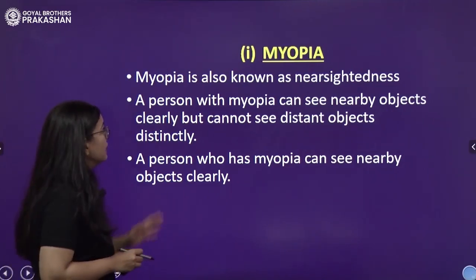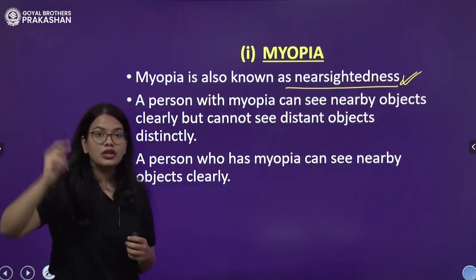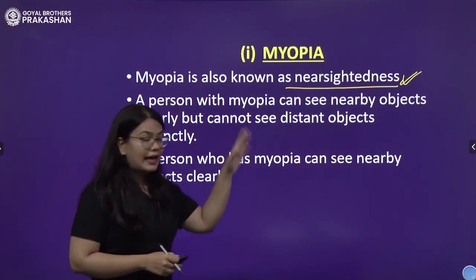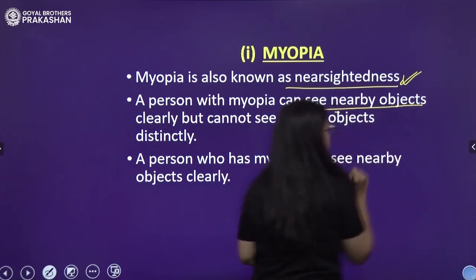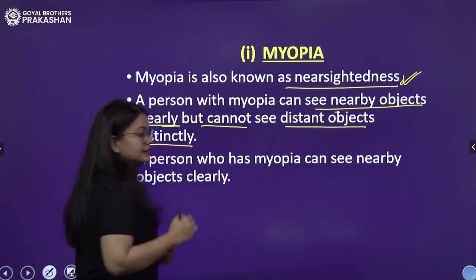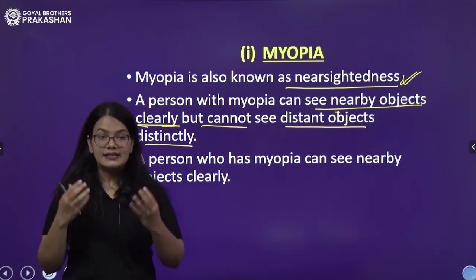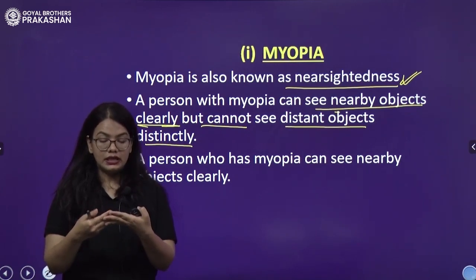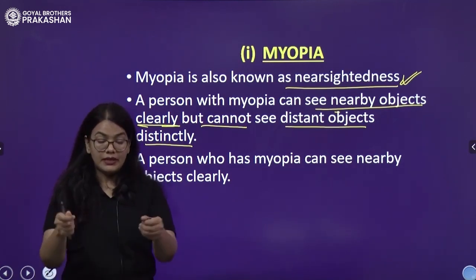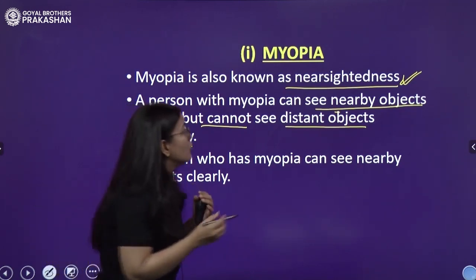Let's begin with myopia. What is myopia? Myopia is also known as nearsightedness — this word will help you memorize what kind of disease myopia is. A person with myopia can see nearby objects clearly but cannot see distant objects distinctly. For example, if I place a book very far apart, I won't be able to read it without my glasses, but if I bring the book closer, even without glasses, I can read it. That is why it is called nearsightedness.